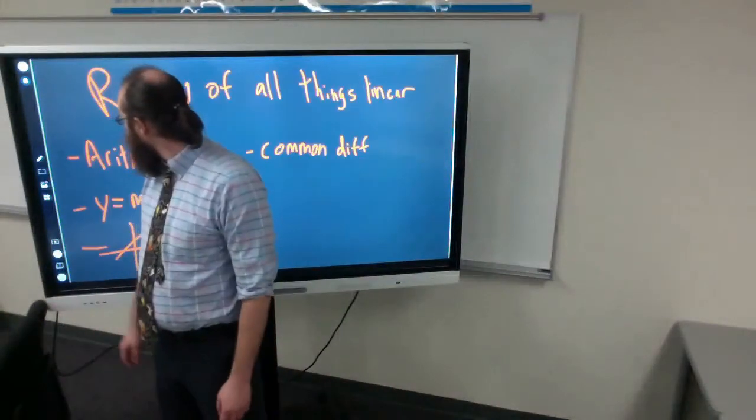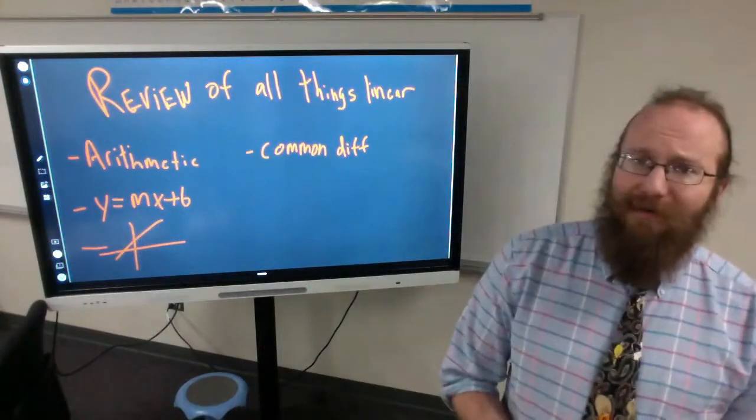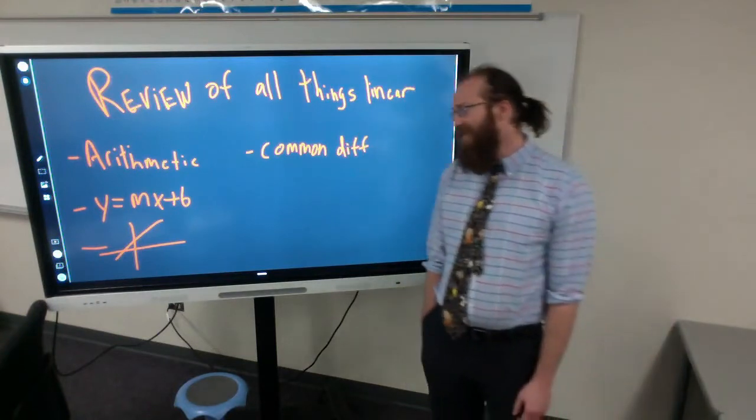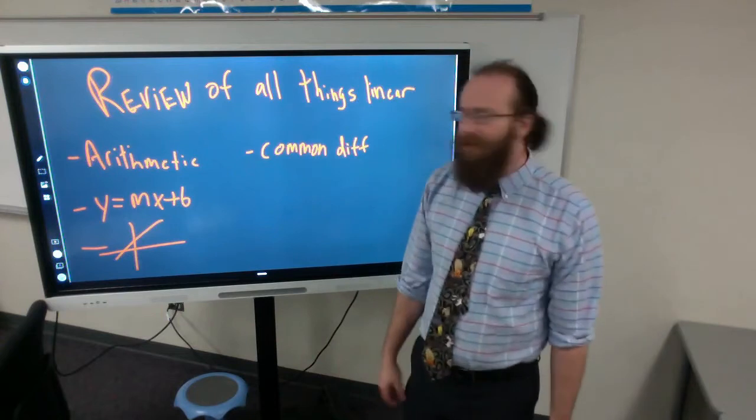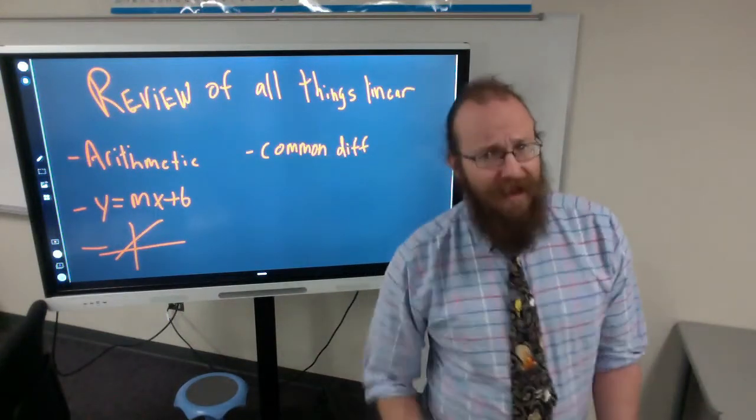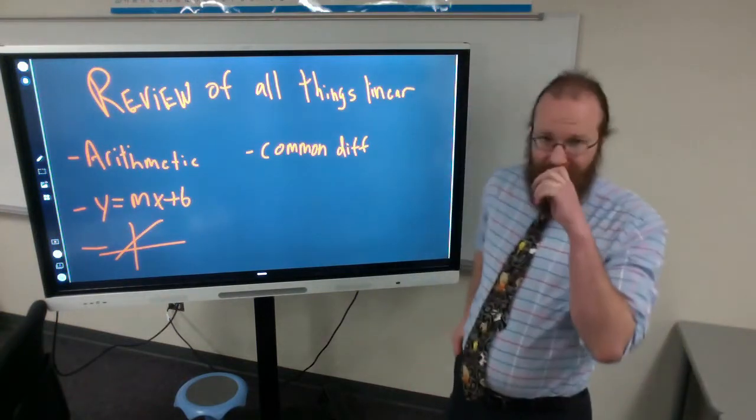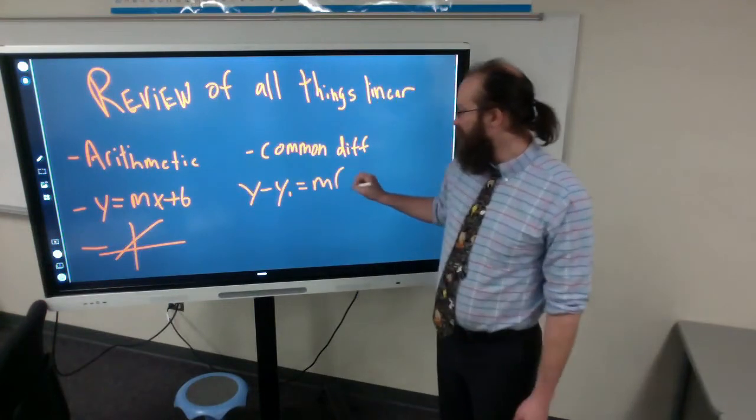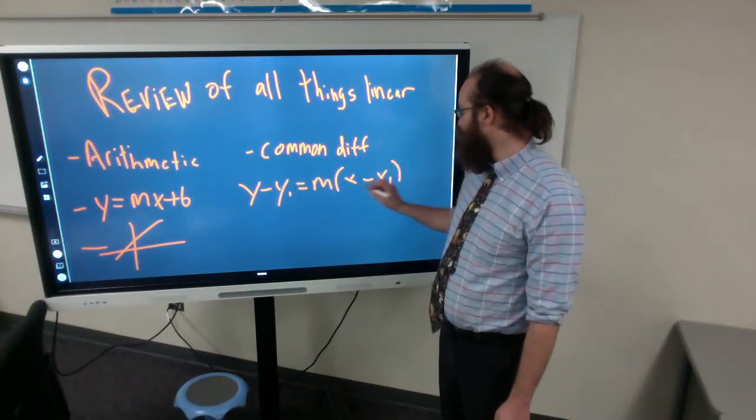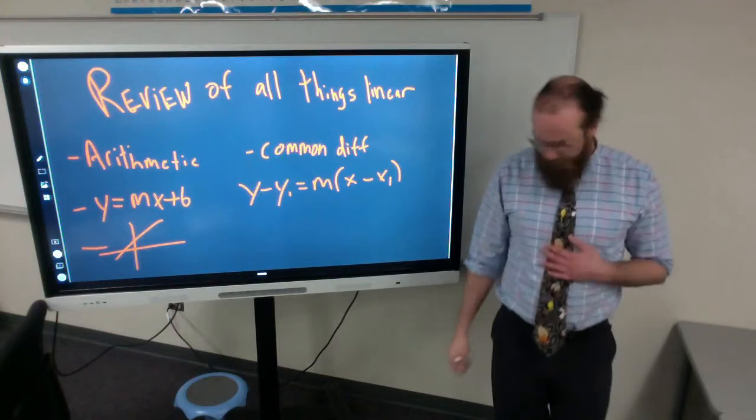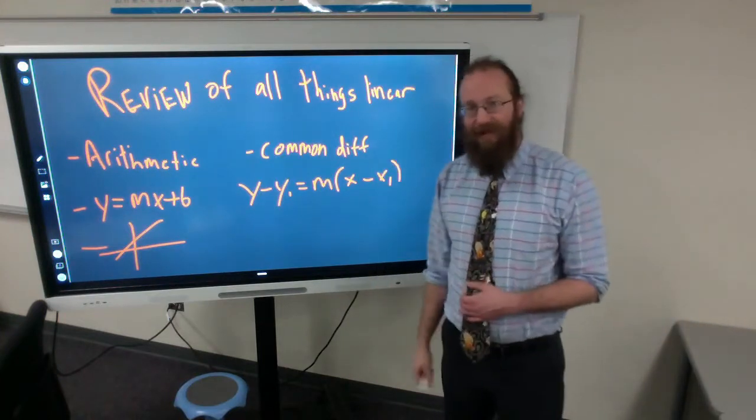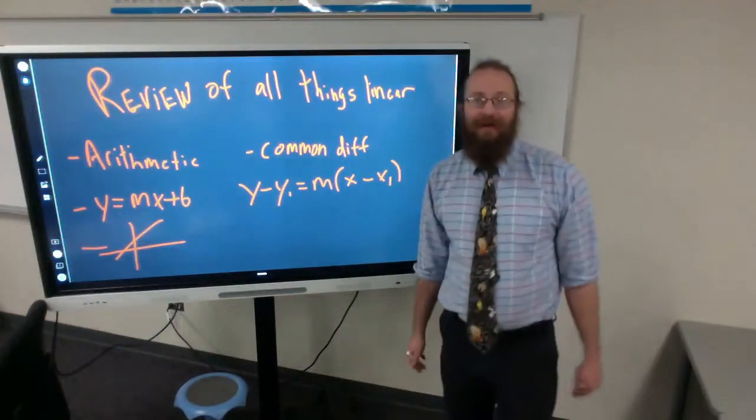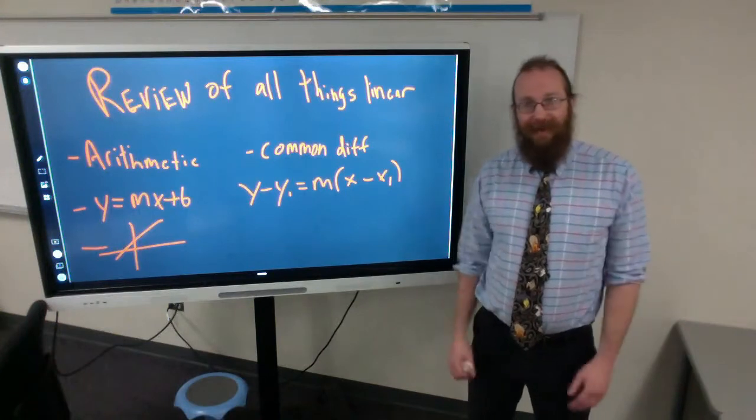So over the next two days it's going to be kind of a review. We'll be talking about geometric and arithmetic sequences. Today we will be talking about all things linear. So if we recall a linear sequence, we call them arithmetic sequences. They follow the form y equals mx plus b, or y equals the slope times x plus b. There's also another form which is called point slope, and that is y minus the first y value equals the slope times x minus the first x value. All linear equations should be straight lines and they should follow a pattern of having a common difference.